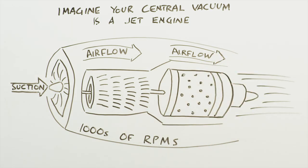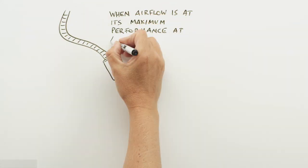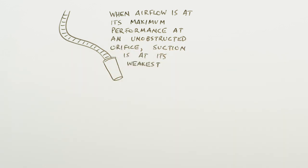A central vacuum motor operates along the same principle. When air flow is at its maximum performance at an open, unobstructed orifice, suction is at its weakest.